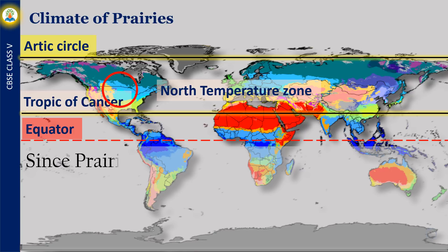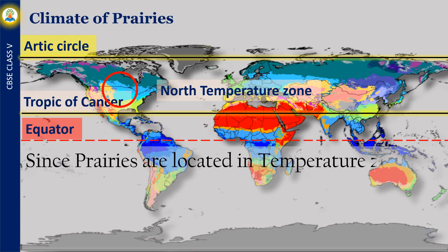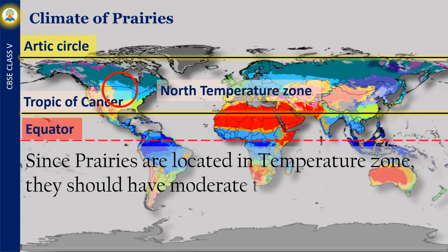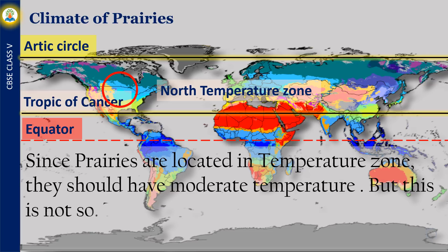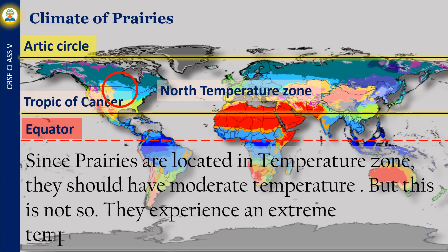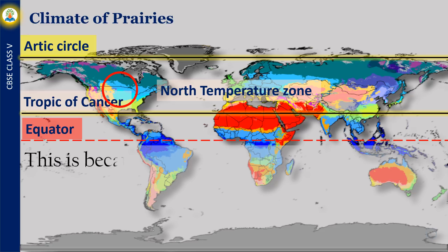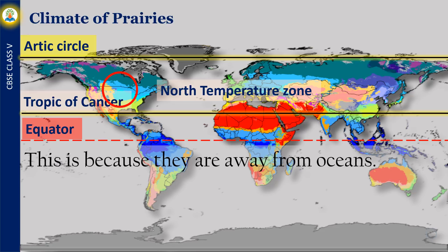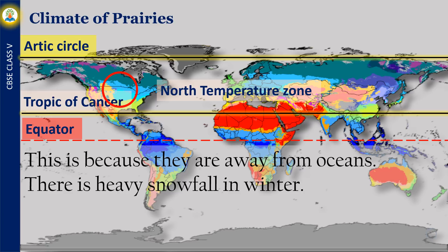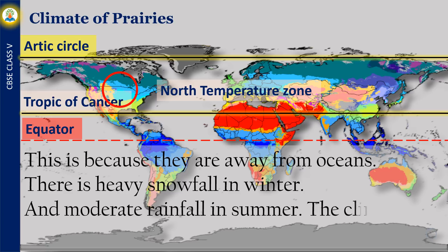Prairies are located in the temperate zone, so they should have moderate temperature, but this is not so — they experience an extreme temperature. This is because they are away from oceans. There is heavy snowfall in winter and moderate rainfall in summer. The climate and the soil are suitable for the growth of grasses.